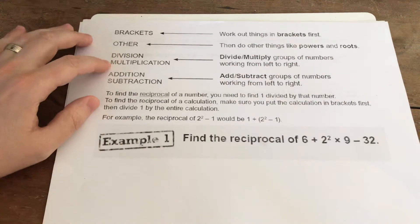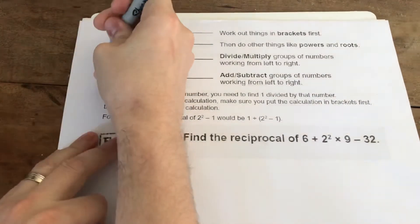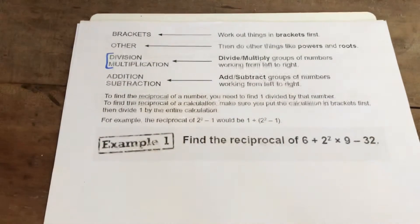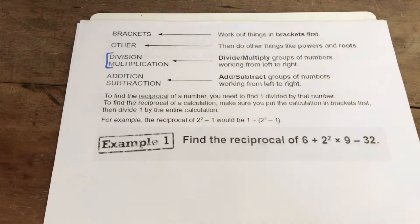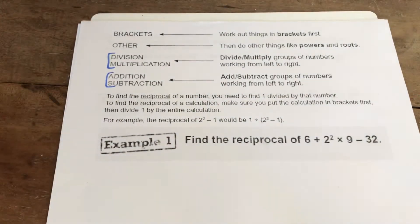You then do your division and multiplication. Notice these are blocked together. That is because it does not matter the order that you do division and multiplication in. And the same goes for addition to subtraction. You should work left to right in both of those cases when you have those left.